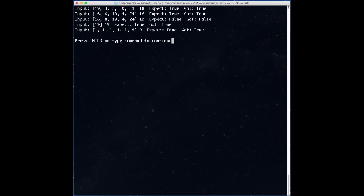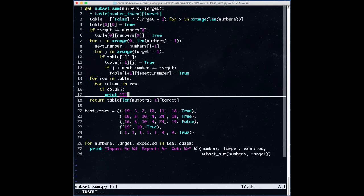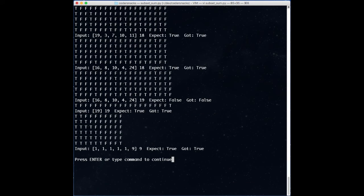To make this a little easier to visualize, we'll temporarily add some code that prints the table out at the end of the dynamic programming step. If you'd like, pause the video and take a look at some of these tables.